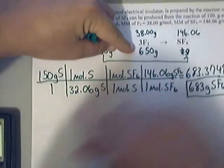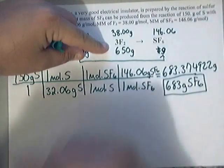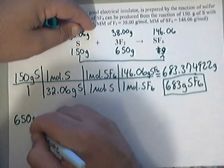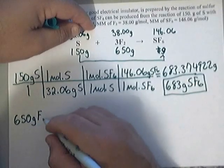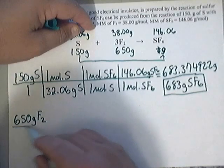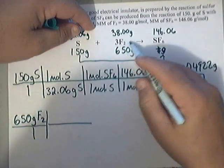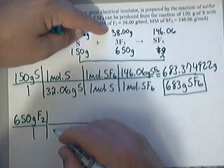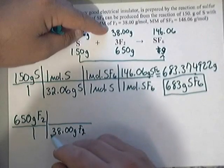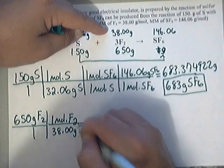We were given on this one, sorry for hitting the camera, on this one we were given 650 grams of F2. 650 grams of F2. Put my given over one. The molar mass of the F2 is this 38 up here. So this is 38.00 grams of F2. This is molar mass. That's one mole of F2.